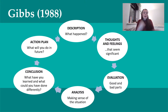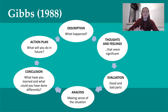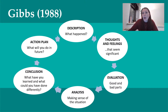We start at the top with the description: what happened? What was the experience? Give as much detail as you want or a brief overview — essentially, what happened? Then you move on to what thoughts and feelings were there that seemed significant, what emotions seemed strong, what thoughts were you having — before the experience while preparing, during, or particularly afterwards. What seemed significant to you and how did you feel in that moment?